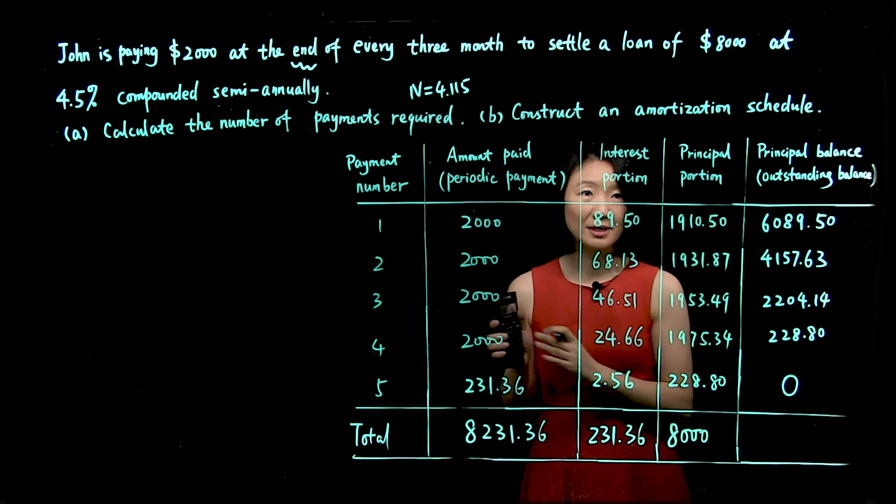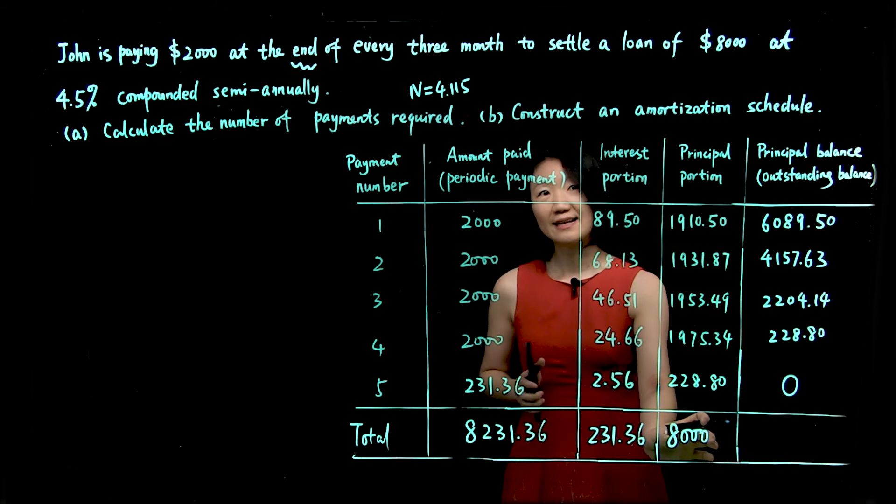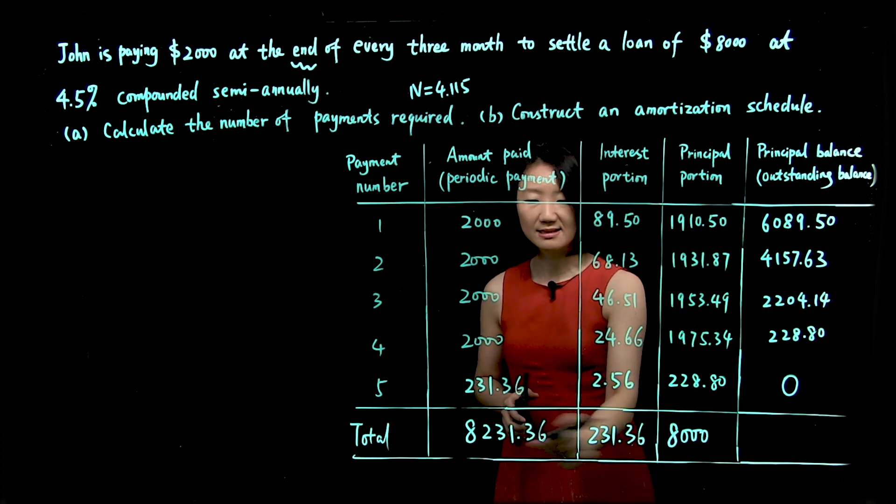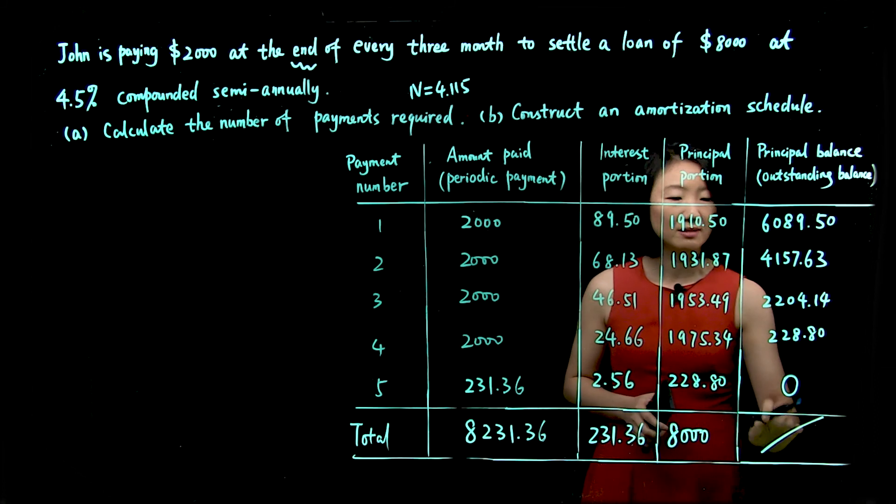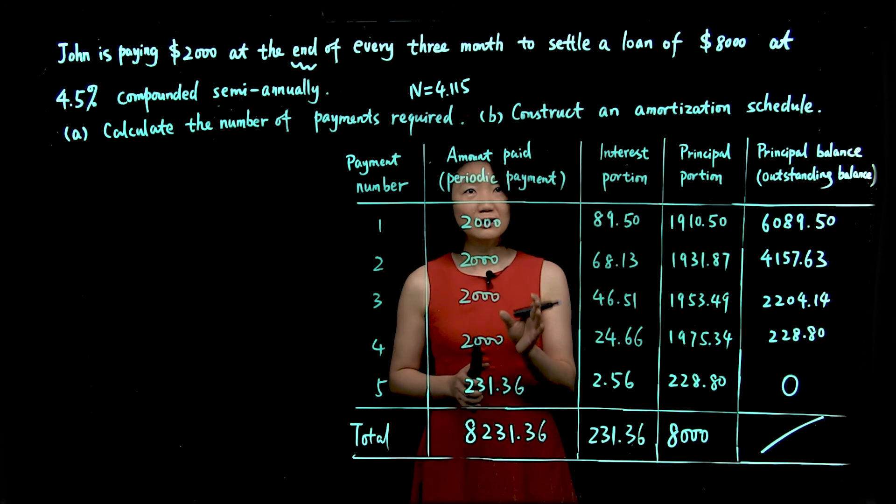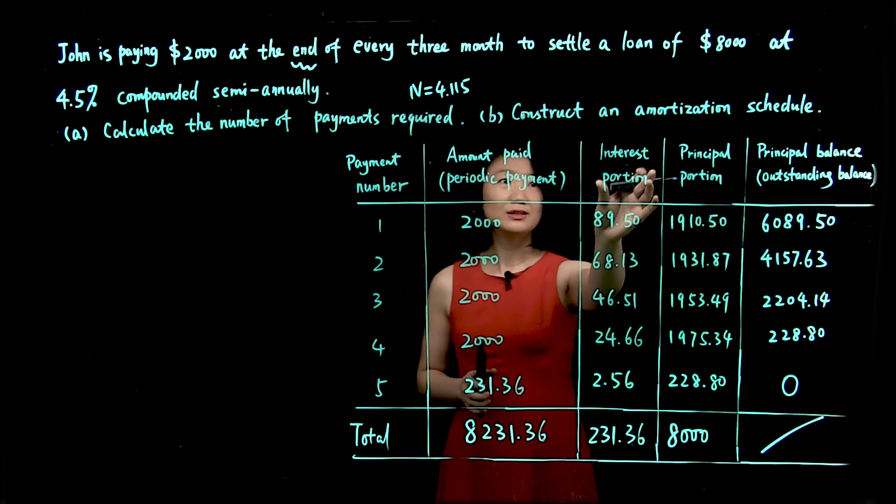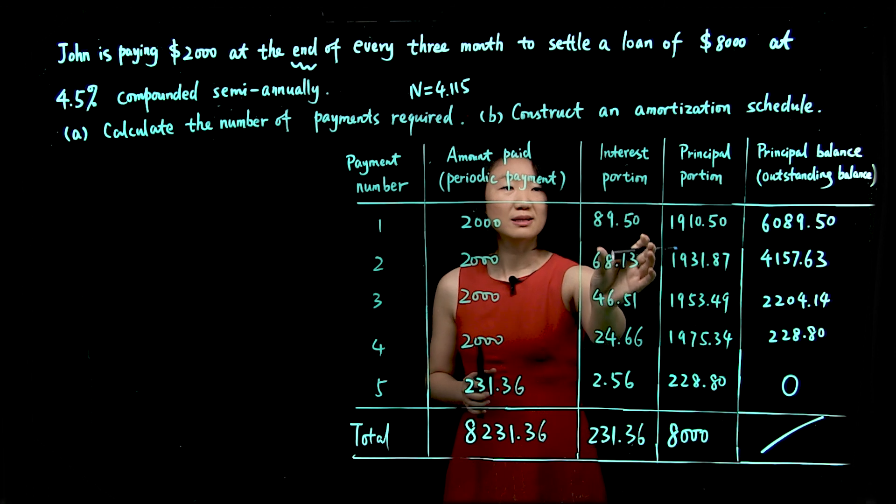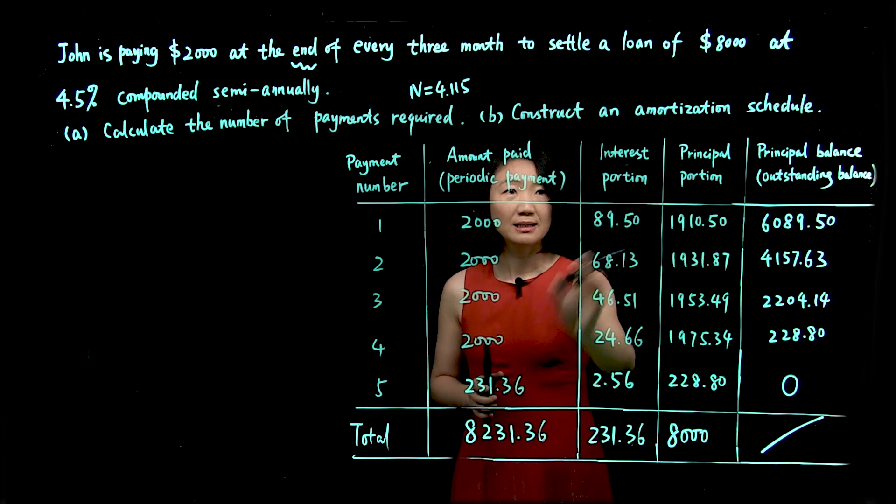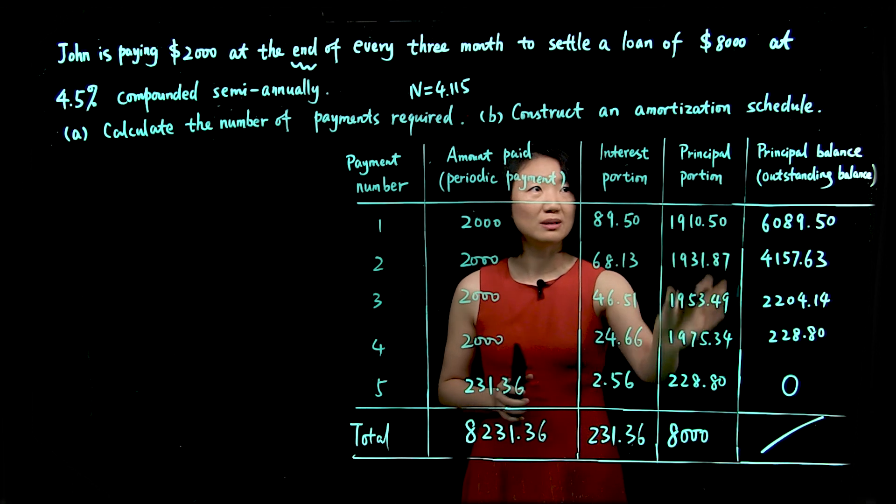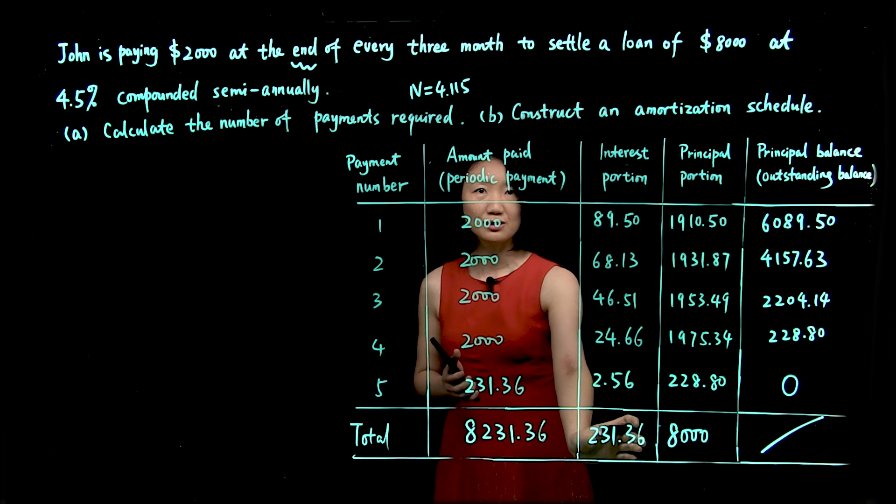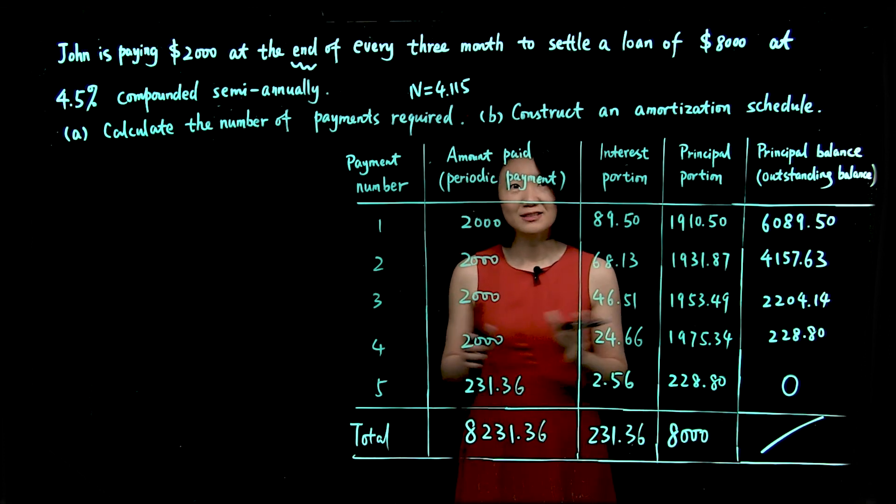Now we solve the problem, we're done. But there are still a few observations I want to point out to you. First, for interest portion, as you go with each payment, the interest portion decreases, and more money goes into principal. So although you're making the same payments every time, less and less is being paid for interest, and more and more goes to principal. And also, you know, the total amount paid covers total interest and the total loan amount. All right, that's all for this question. Thank you for watching.